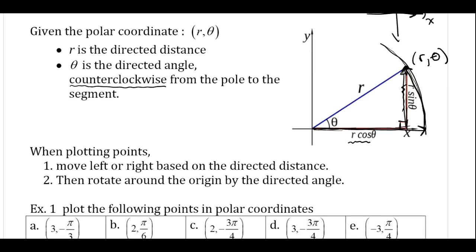When you're plotting points, you're going to move left or right based on the directed distance. If the directed distance is positive, you're going to move to the right. If it's negative, you'll move to the left. And then you rotate around the origin by the directed angle. If the directed angle is positive, you'll rotate counterclockwise, and if it's negative, you'll rotate clockwise.